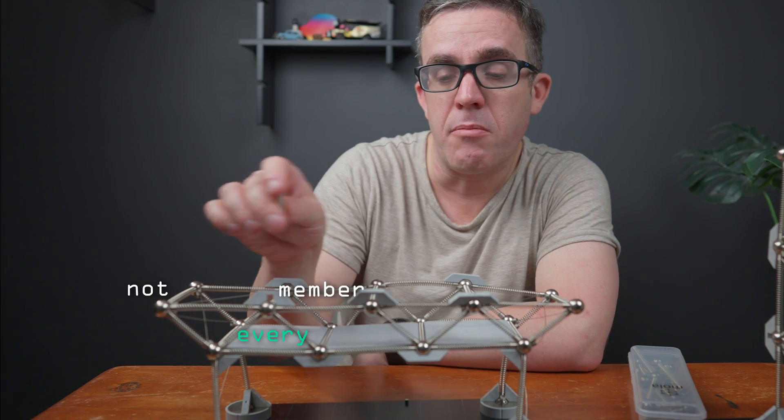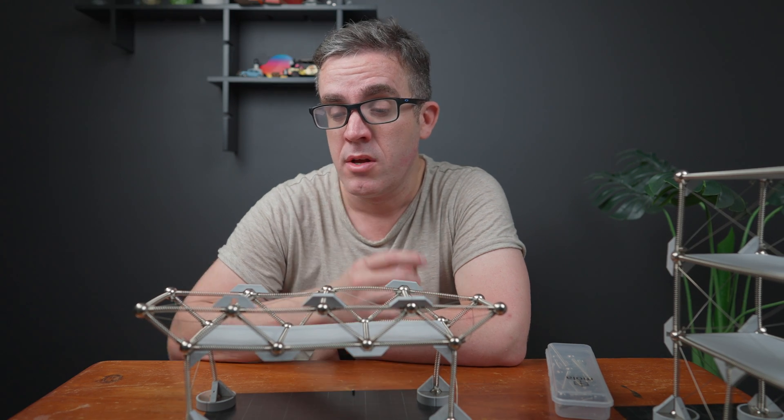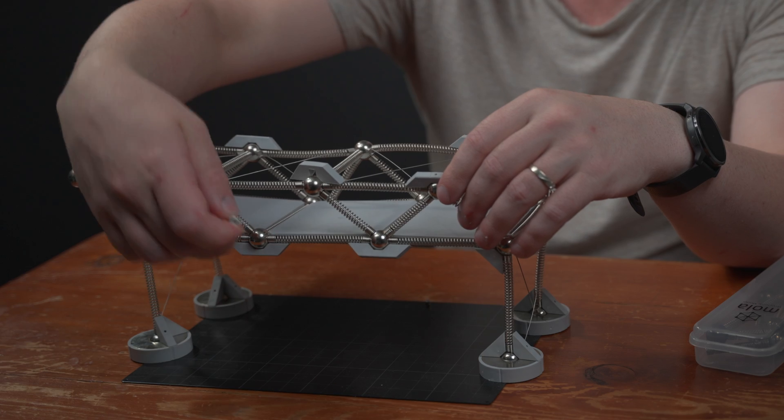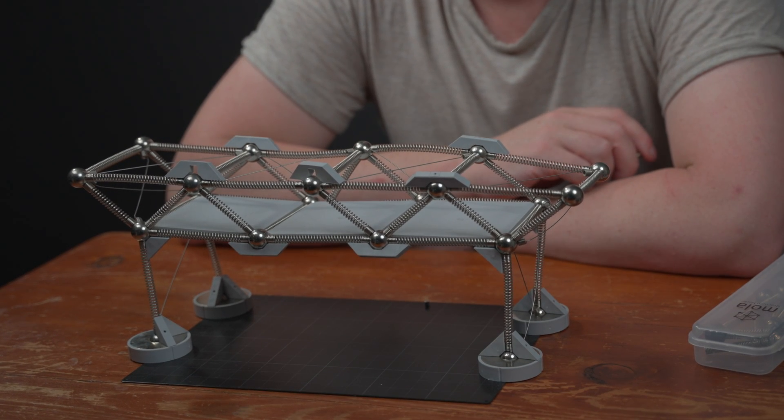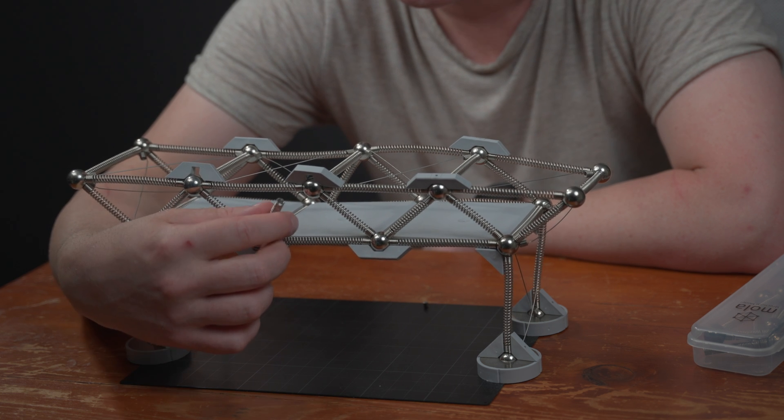It means that not every member in this structure is super critical. So we can work out where we can reduce weight. This is not a life safety or a collapse risk but more of a service and occupancy requirement. This one can be designed to its limit state.